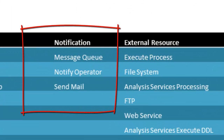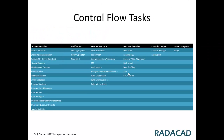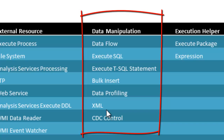We have notification tasks like message queue, notify operator, and send mail. These are for notifying someone of an event — for example, if our data flow was successful we can send a mail, or if it failed we can send an important message with the exact error details as the body to a support person responsible for ETL packages. We also have tasks that work with data: data flow, execute SQL (for executing SQL queries or any SQL statements in any database), bulk insert, and data profiling tasks.